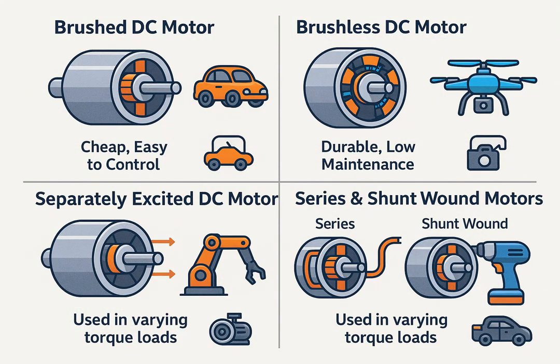Common DC motor types include: brushed DC motor—simple and cheap; brushless DC motor (BLDC)—durable with low maintenance; separately excited DC motor—flexible control; and series and shunt wound motors—with torque variation. Applications include robotics, power tools, medical pumps, EVs, drones, fans, cameras, and servos.